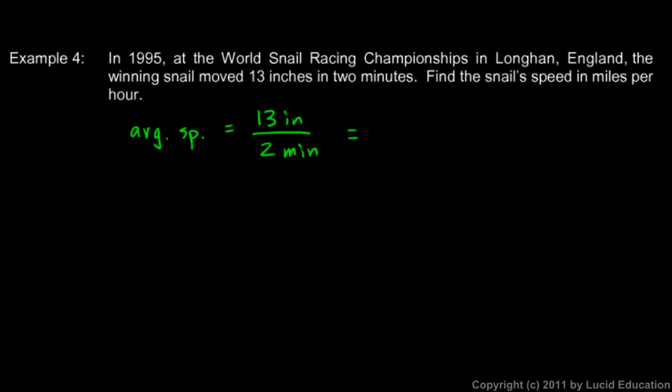So this is pretty easy. 13 divided by 2 is 6.5. So he was going 6.5 inches per minute. And that should make a lot of sense. If he goes 13 inches in 2 minutes, then he goes half that distance per minute. So that's the speed.